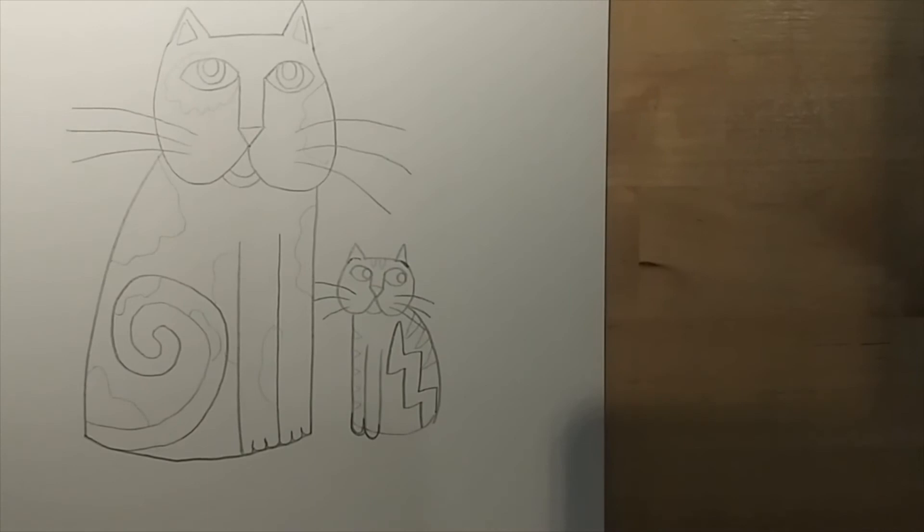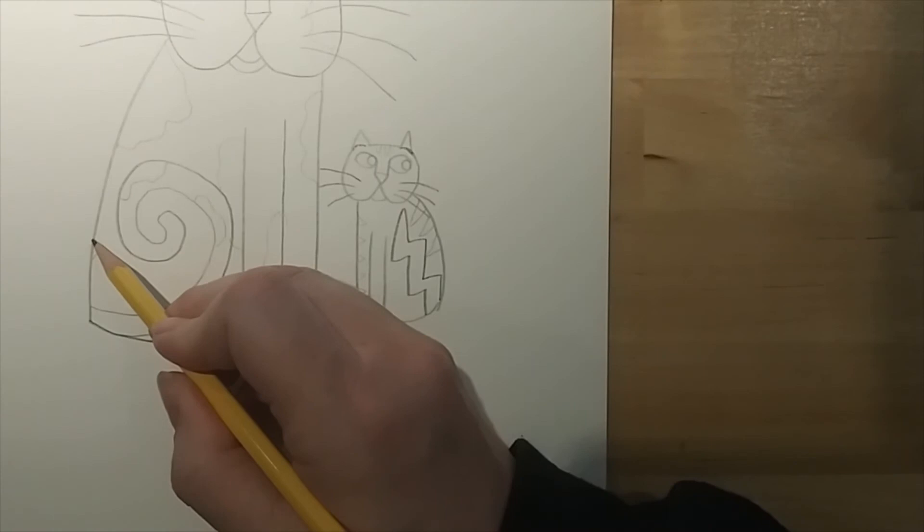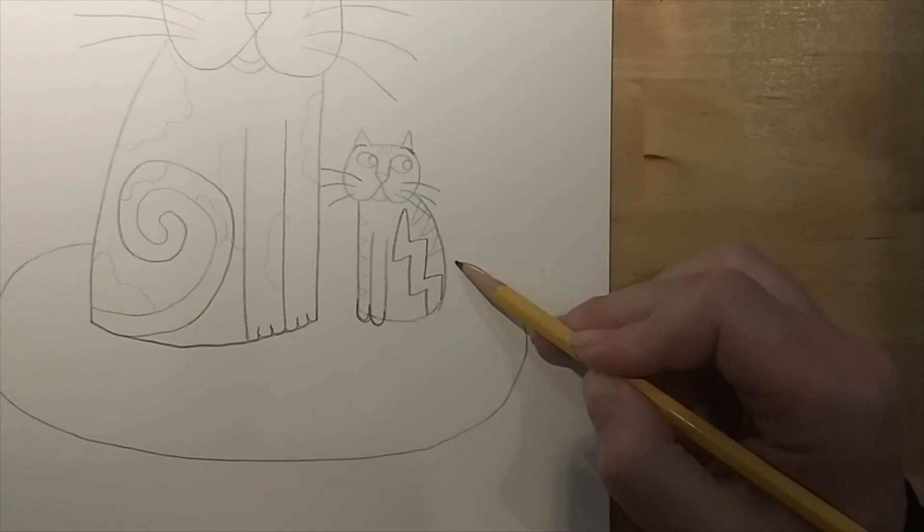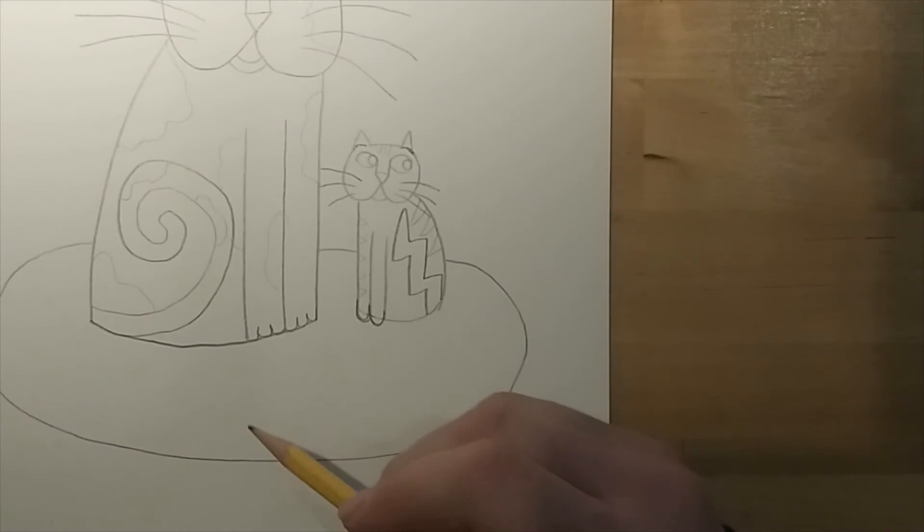The next thing we're going to do with our cats is we're going to put them on a rug. So I'm going to slide my camera down a little bit. To put these cats on a rug, I'm going to make an oval shape that goes underneath their bottoms, just like this. And if you have more than one cat, make sure you join that part in the middle part, too. And then what I'm going to do is I'm going to make this a spiral rug.